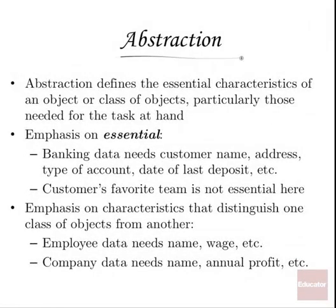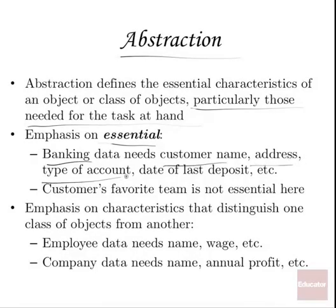Abstraction defines just the essential characteristics of the object or class of objects, particularly those that are needed for the task at hand. You don't necessarily want to have all possible data because that'll make your application too large. So you just abstract the ones that you need. For example, banking data will need the customer name, their address, the type of account, the date of the last deposit, etc. The customer's favorite team — not so important. We can leave it out of our banking application. You have to analyze your situation and determine what data you're going to abstract into your system.